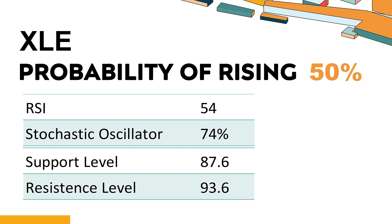The probability of XLE's share price rising is 50%. When the probability of rising is higher than 50%, it means that the stock has a higher chance of rising. Combining multiple technical analysis indicators, XLE has four bullish signals and three bearish signals.